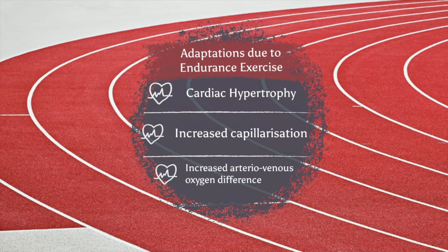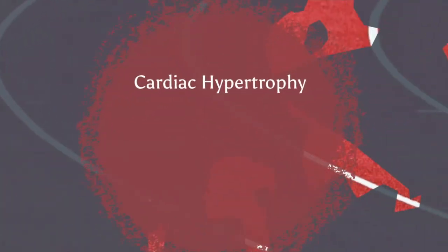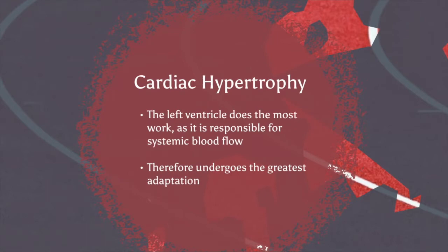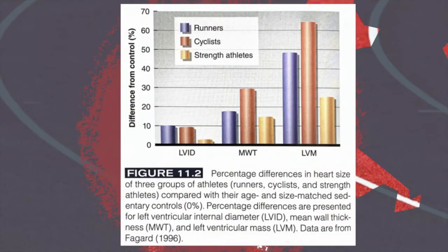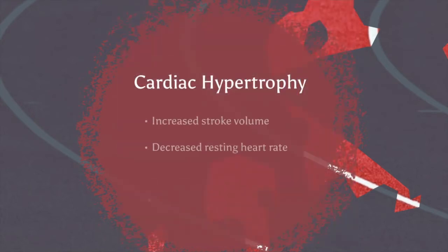When we exercise, the left ventricle is the part of the heart that does the most work, because it's responsible for systemic blood flow to the working muscles and vital organs. For that reason, it undergoes the biggest adaptations. As you can see from the graph, the size of the chamber itself increases, as well as the thickness of the ventricular walls.